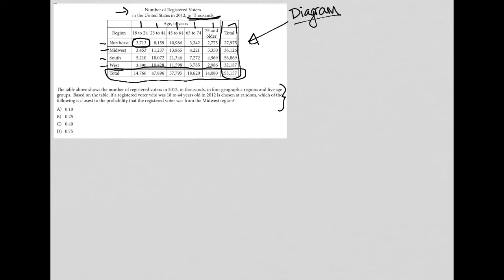So the question says the table above shows the number of registered voters in 2012 in thousands. So they tell us again in four geographic regions and five age groups, which I already know because I took a second to take a look at it. Based on the table, if a registered voter who was 18 to 44 years old.